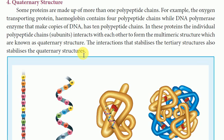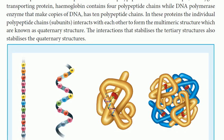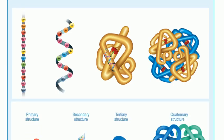In summary: quaternary structure involves more than one polypeptide chain. For example, hemoglobin contains four polypeptide chains, and DNA polymerase makes copies of DNA with ten chains. The interactions that stabilize tertiary structure also stabilize quaternary structure. To recap: primary structure is the linear chain, secondary structure is the helical form, tertiary structure involves further folding, and quaternary structure involves multiple chains.